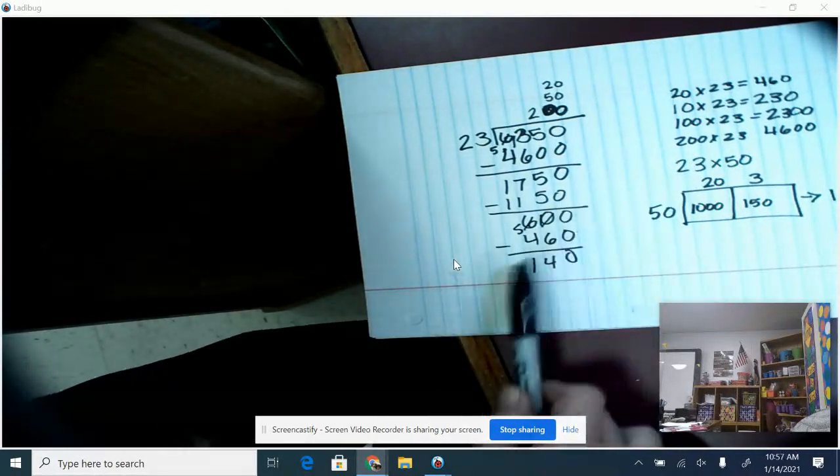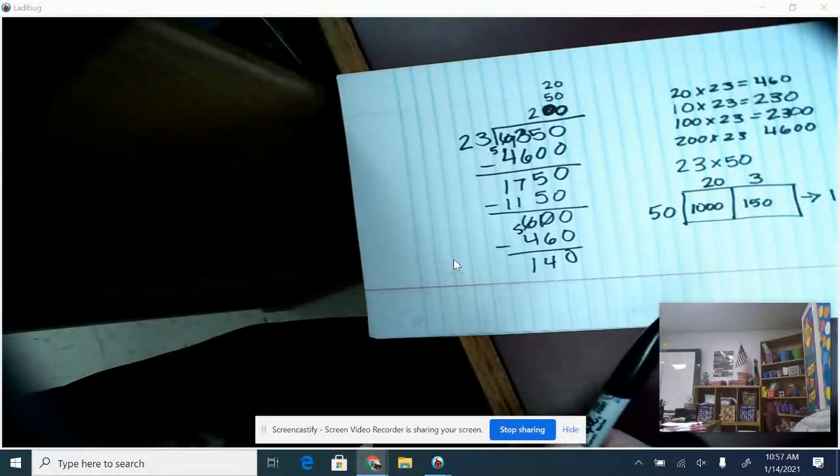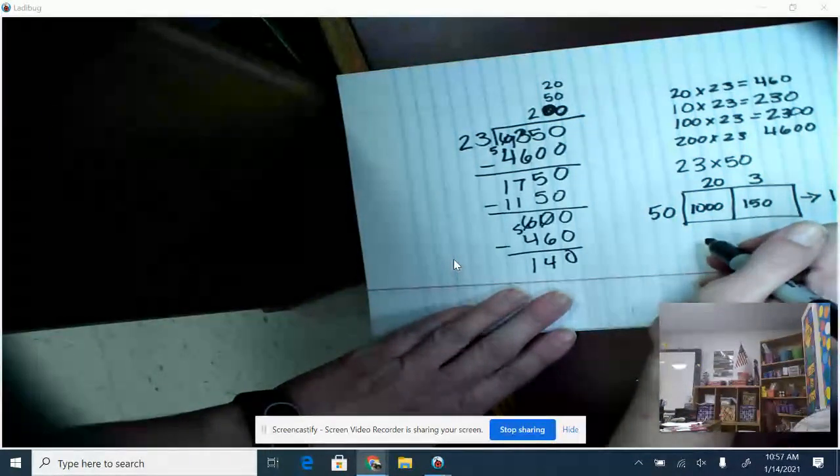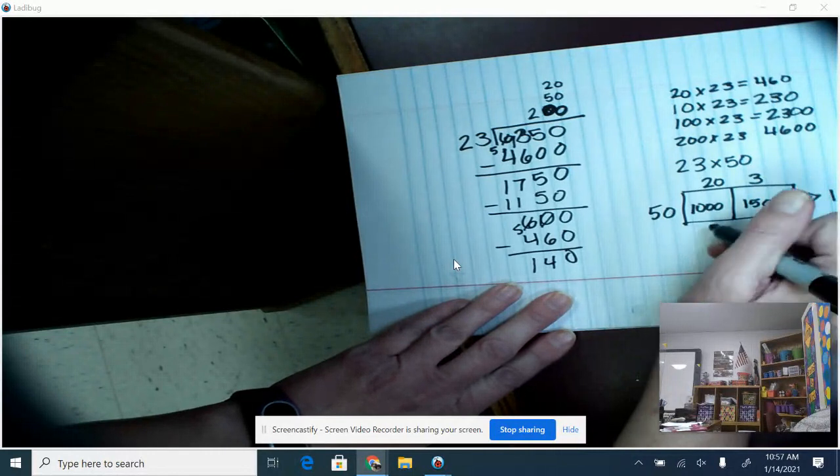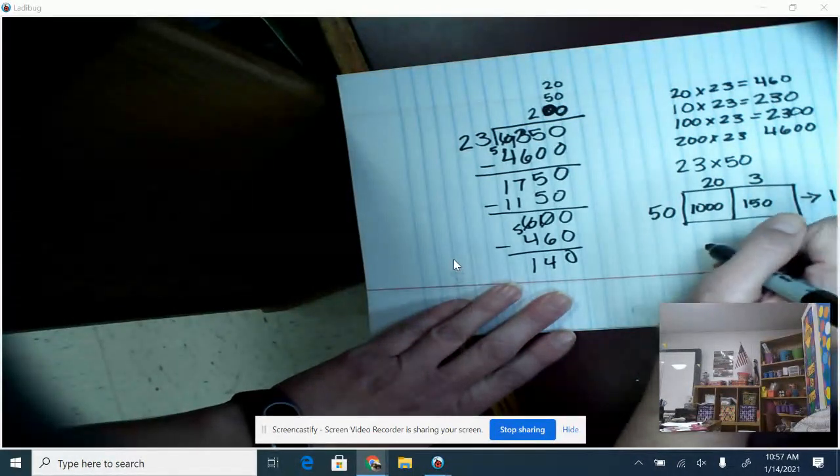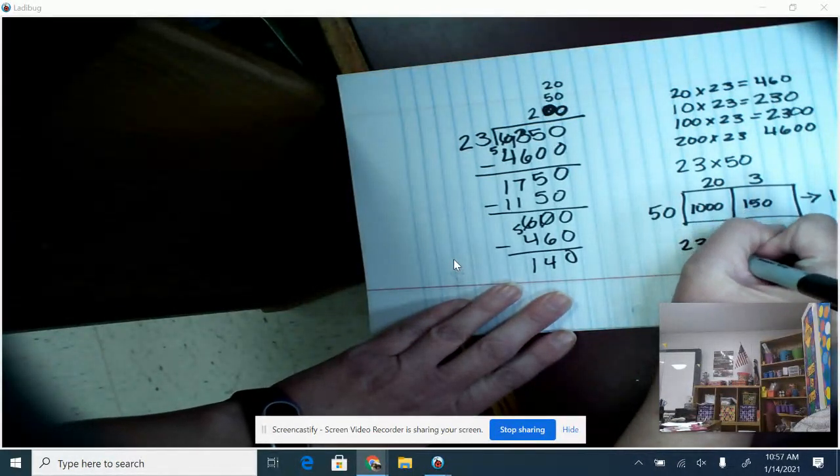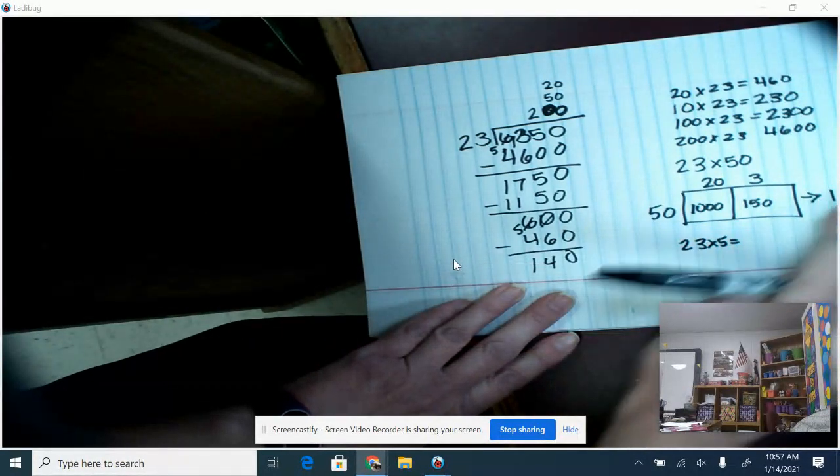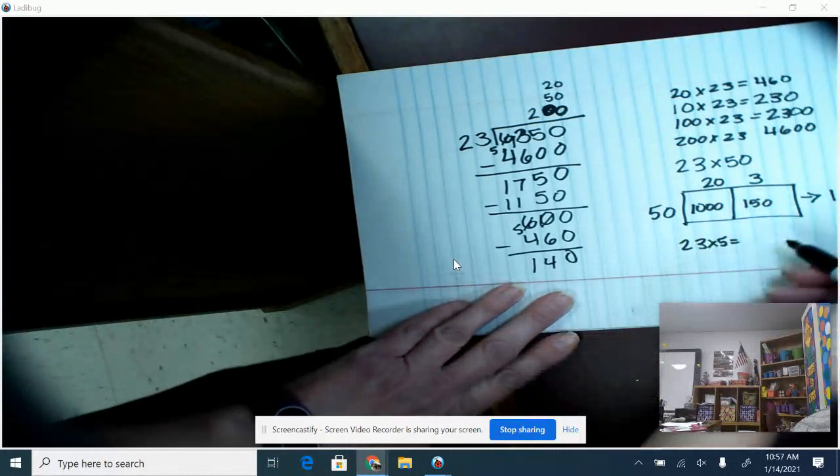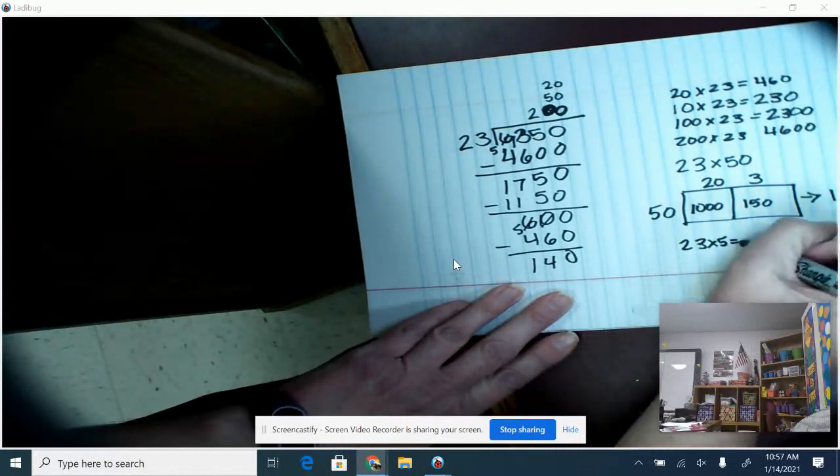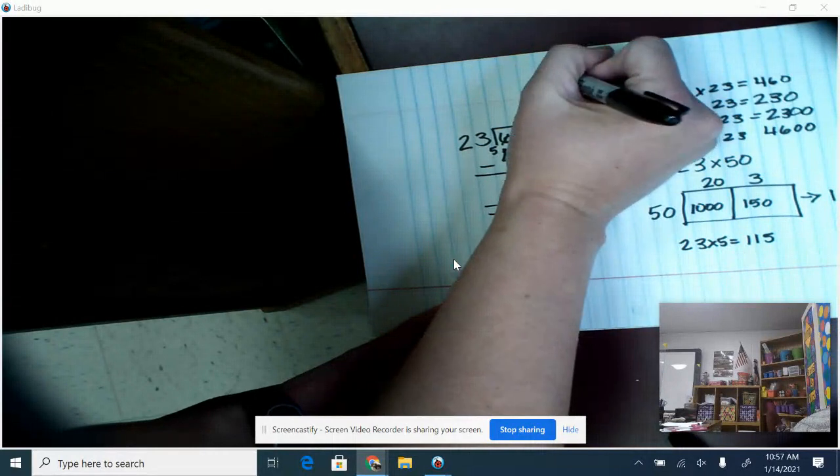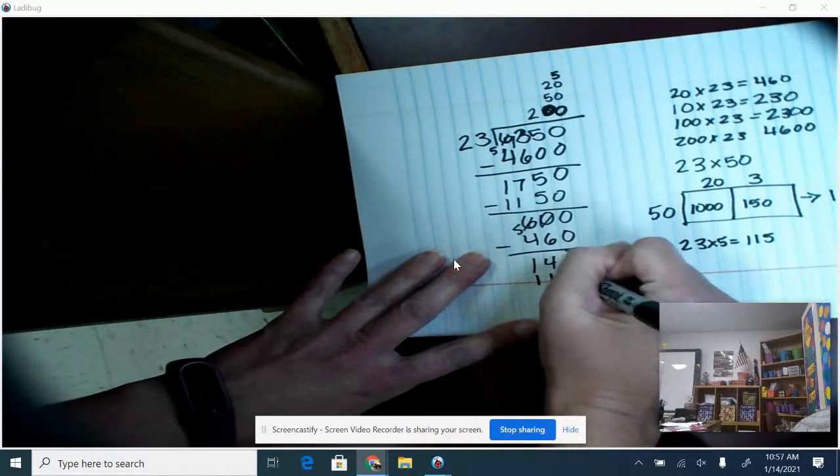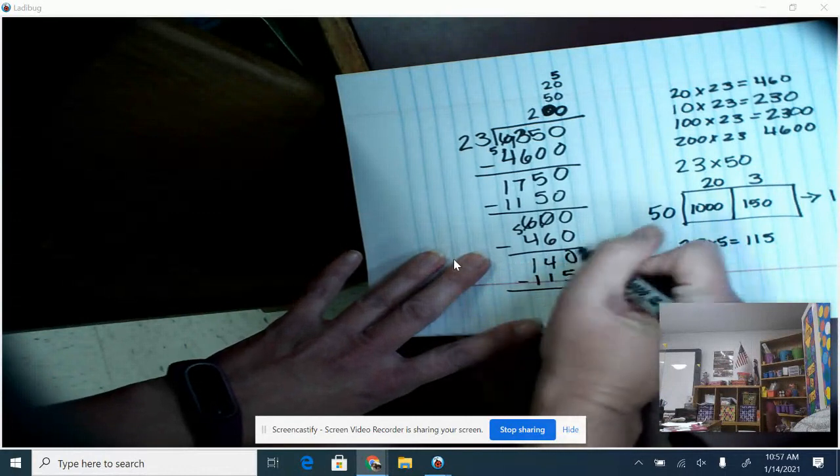So I can't make any more groups of 10, but I could try at 5. So if I did 5 times 23 – and I can actually use what I did over here – 23 times 50 was 1,150, so 23 times 5 is just going to be 115. So that works as another group. So I'll put my 115 here, then I'm going to subtract.